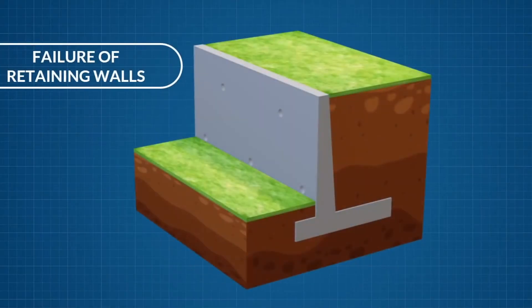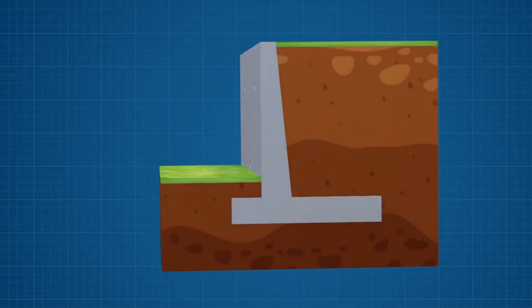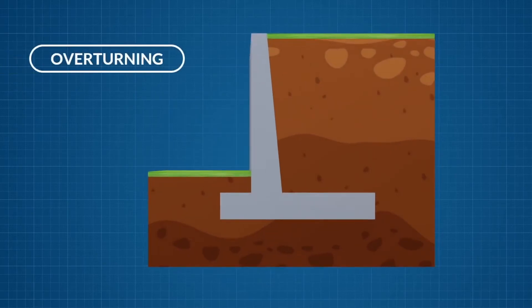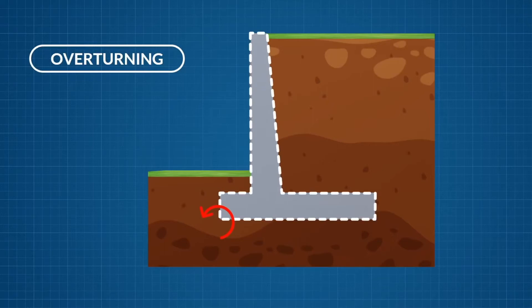Let's now look at the failure modes of retaining walls. The first failure mode is failure by overturning. In this failure mode the toe will act as the center of rotation and the entire wall will rotate about this point.